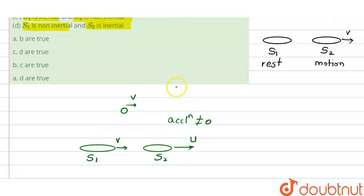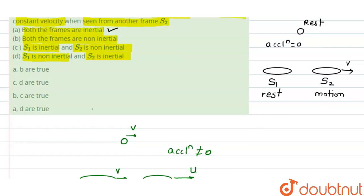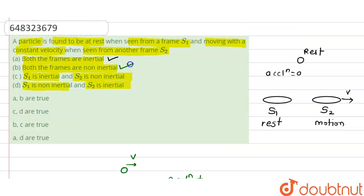We can conclude that both frames are non-inertial in this scenario. If we consider one frame inertial and one non-inertial, the given conditions would not be satisfied. Therefore, statements A and B are true, while C and D are incorrect. The correct option is option A.